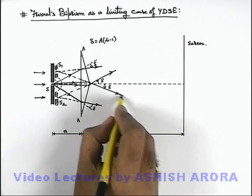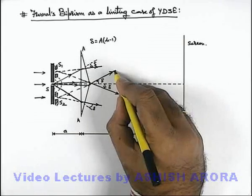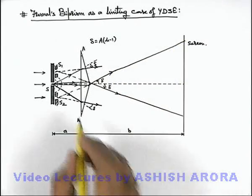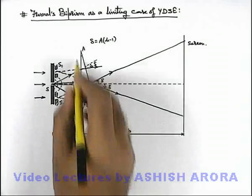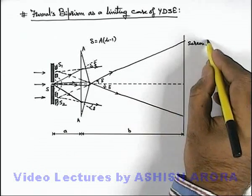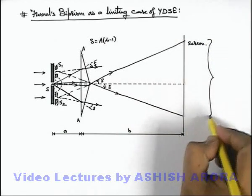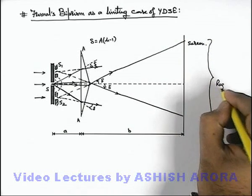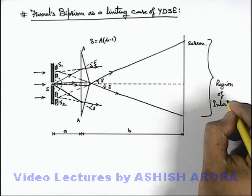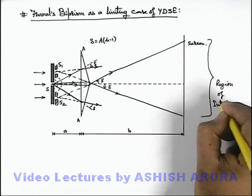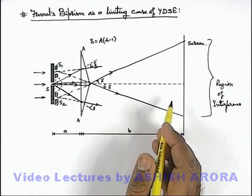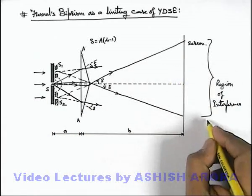This is the region where light rays from the two sources are going to interfere. If the length or the size of this biprism is considered to be large, this is the region which we can call as the region of interference, where the two light beams from the two slits are superposing onto each other. So this is the region where fringe pattern is obtained.